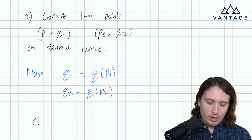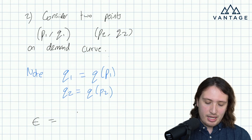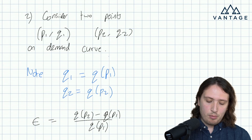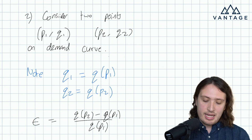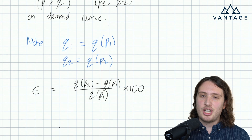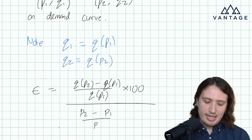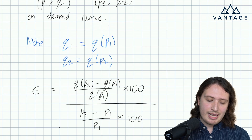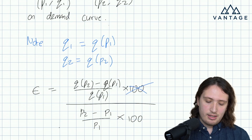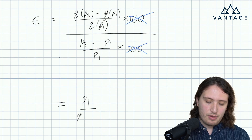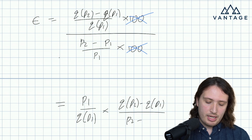So what is epsilon? It's the percentage change in quantity — that's the change in quantity divided by the initial quantity, times 100 — per percentage change in price, which is the change in price divided by the original price, times 100. We obviously get some nice simplification: the hundreds cancel, and dividing by a fraction is like multiplying by the reciprocal. This simplifies to p1 over q(p1) times [q(p2) minus q(p1)] over [p2 minus p1].